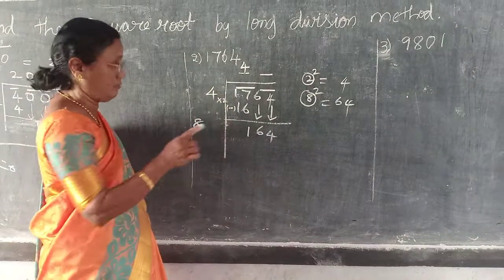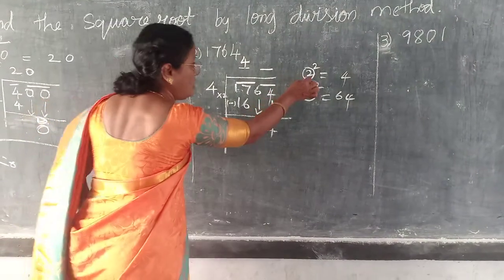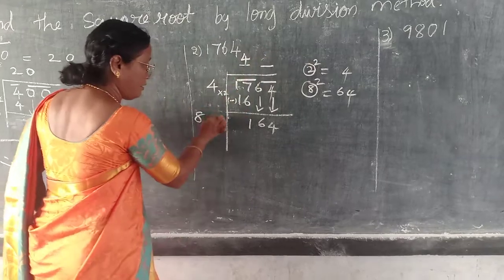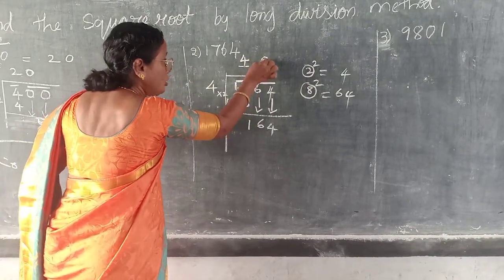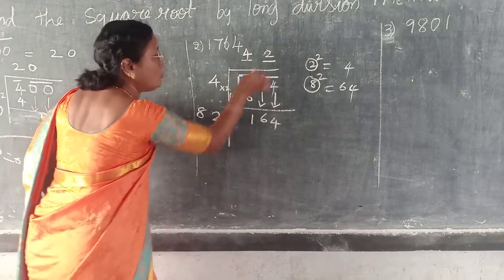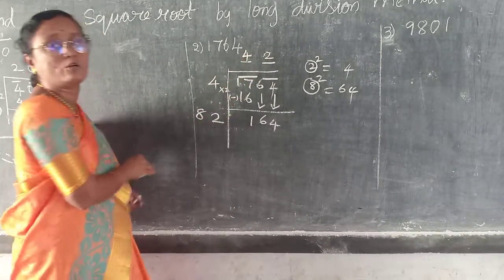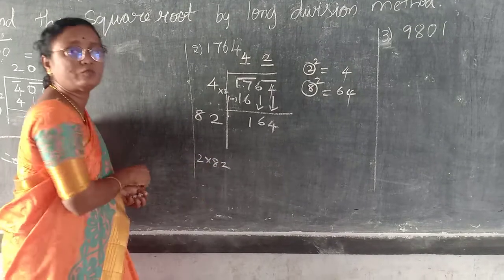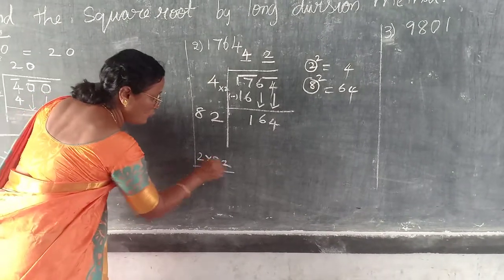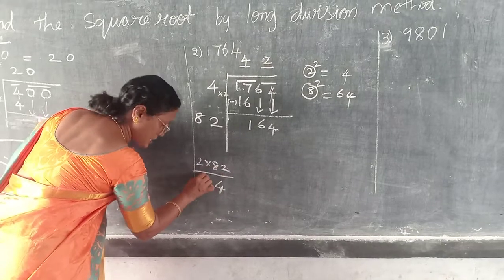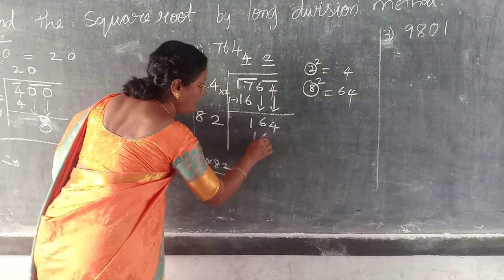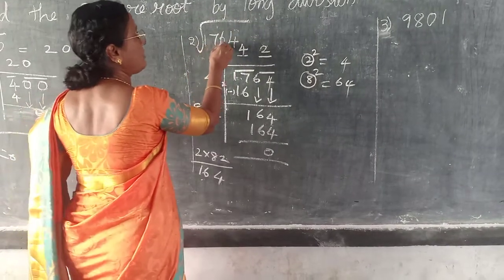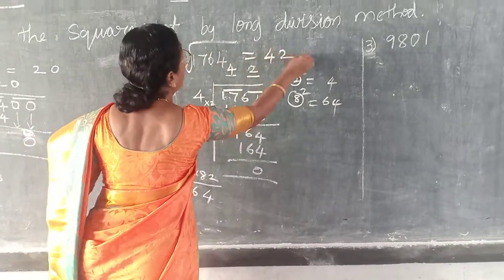So which one you have to take? You have to decide: 2 square ends in 4. Write 2 on both sides — don't forget. Now what is it? 2 into 82: 2 2's are 4, 2 8's are 16, so 164. What is the answer? Root of 1764 is equal to 42.